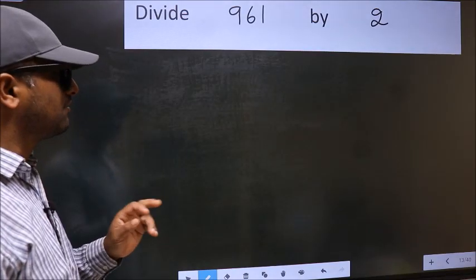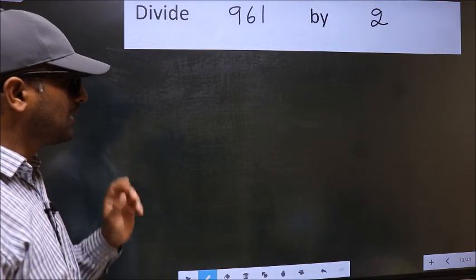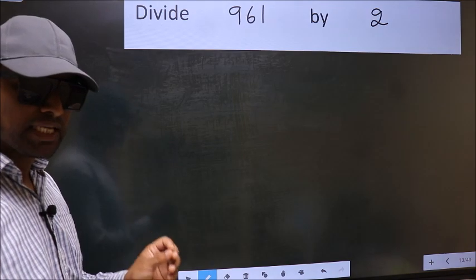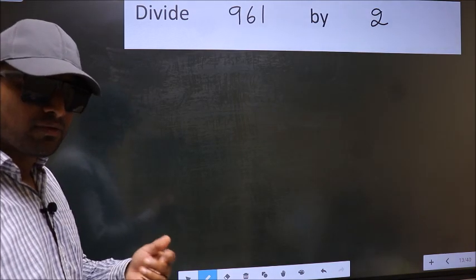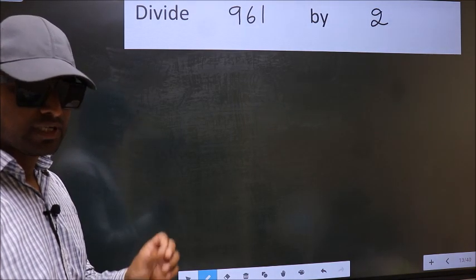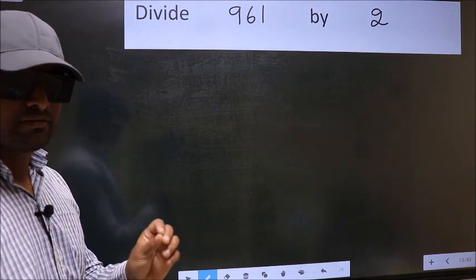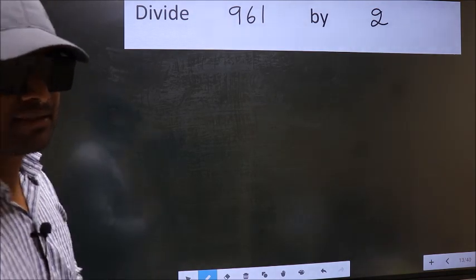Divide 961 by 2. While doing this division, many do this mistake. What is the mistake that they do? I will let you know. But before that, we should frame it in this way.